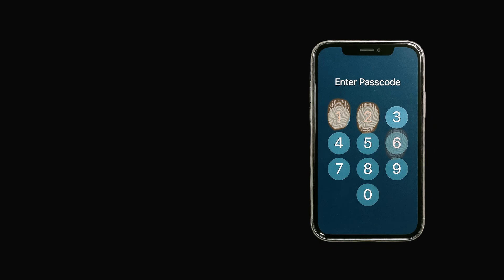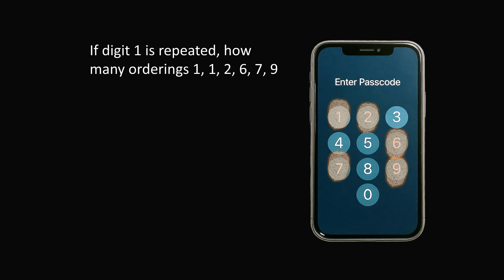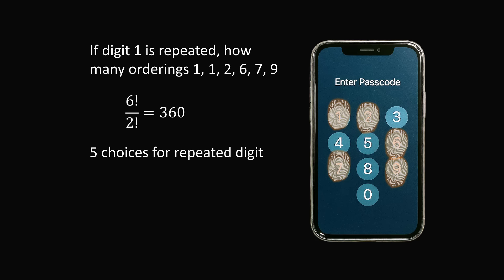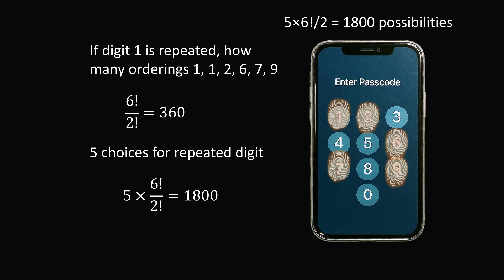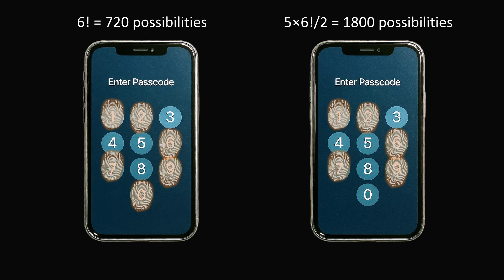But now let's see what happens if we have a total of five different digits for a six-digit passcode. Let's first start with the case that the digit 1 is repeated. We need to calculate how many orderings there are for 1, 1, 2, 6, 7, 9. This will be six factorial divided by two factorial to take into account that digit 1 is repeated twice — so six factorial over two factorial equals 360. But we don't know that digit 1 is the one that's repeated. There are five different choices for the repeated digit, so we multiply by five. Five times 360 equals 1,800. And once again we can see that there are more possibilities if we repeat a digit — we go from 720 to 1,800. So it is definitely the case with a six-digit passcode that you want to repeat one of the digits.